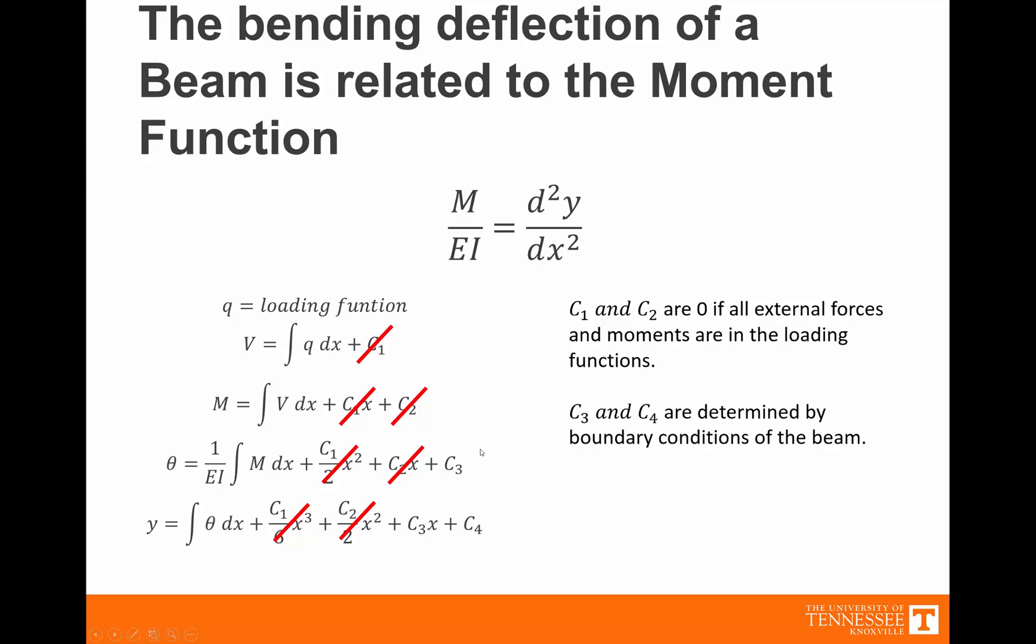C3 and C4 are not that easy to neglect, so they're going to be determined by the boundary conditions of the beam. For instance, for a cantilevered beam, the slope is defined to be zero at zero, if it's cantilevered at x equal to zero. And the deflection is also defined to be zero at zero. So both C4 and C3 are equal to zero.